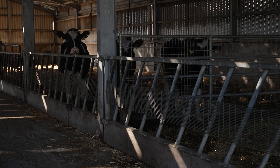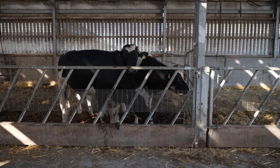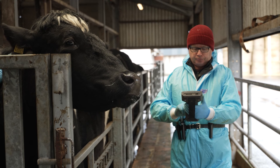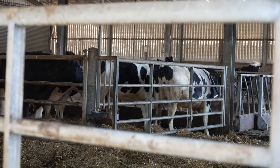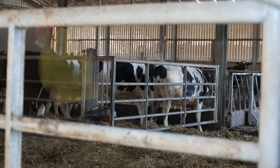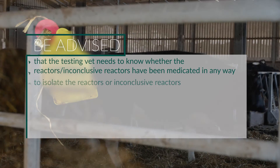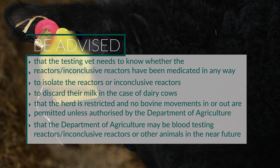Animals identified as reactors at a test must be tagged with a reactor tag in the left ear and the details recorded. When animals are deemed reactor or inconclusive, the keeper must be advised by the testing vet of the need to know whether the reactors or inconclusive reactors have been moved in any way, to isolate the reactors or inconclusive reactors, to discard their milk in the case of dairy cows, and that the herd is restricted with no bovine movements in or out permitted unless authorized by the Department of Agriculture.